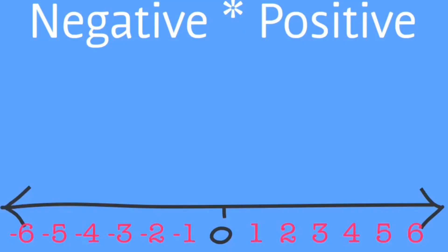In the next example, the first factor is negative. So the person on the number line will be facing left. And the second factor is positive. So the person will be walking forwards. This will result in a negative product.